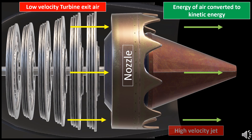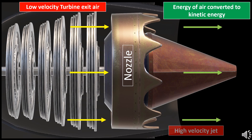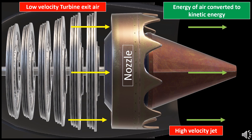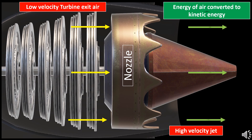The nozzle is designed such that the energy of the entering air is converted into kinetic energy — that is, the nozzle increases the velocity of the air. The air enters with high energy and low velocity, and leaves the nozzle with low energy and high velocity into the atmosphere. This is the complete cycle of the aircraft's gas turbine engine, and you would have a few questions in your mind after knowing this cycle.